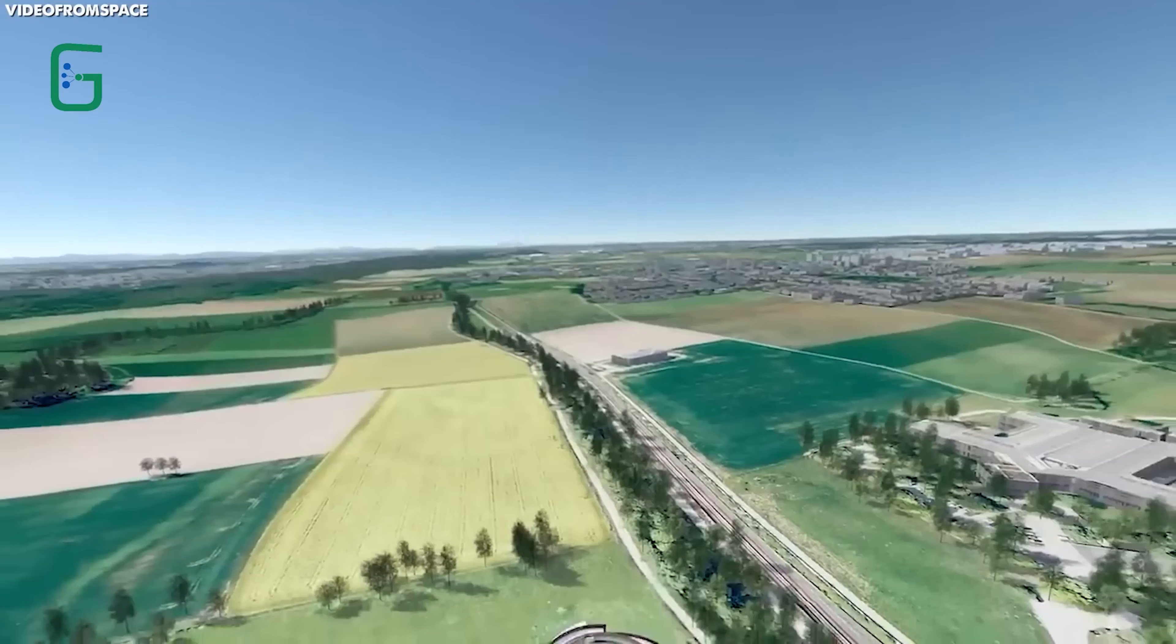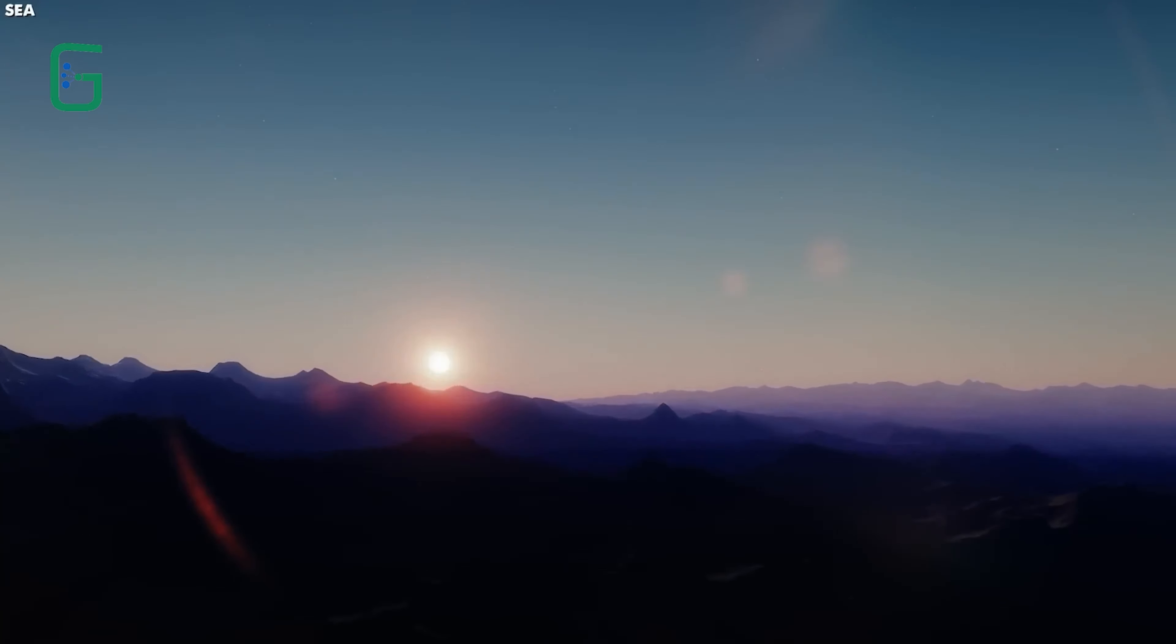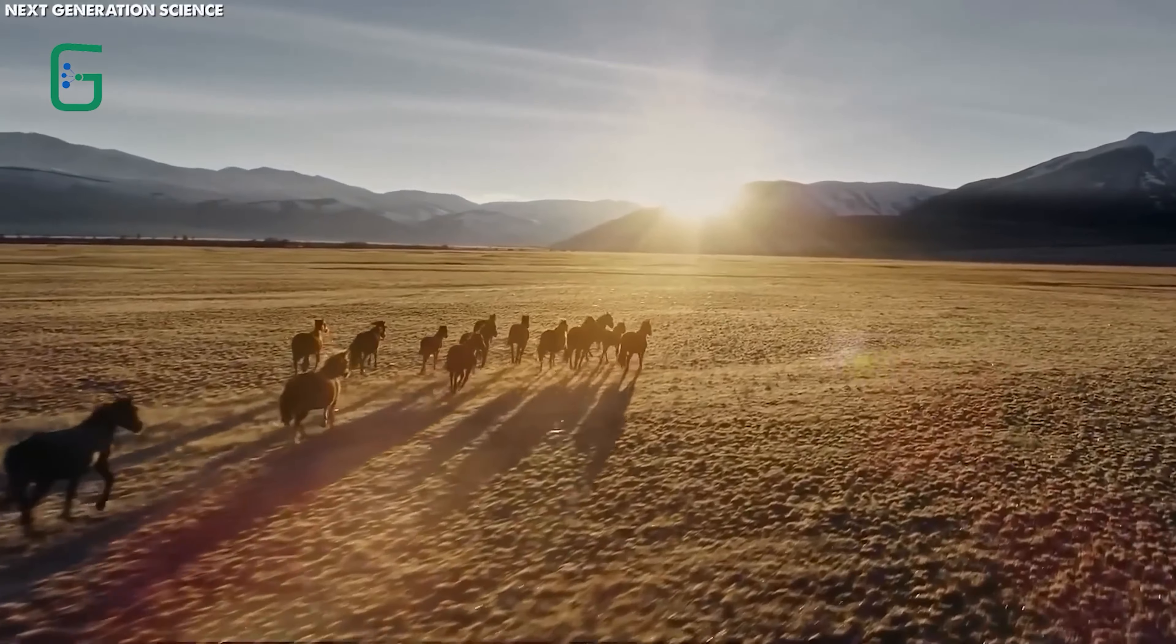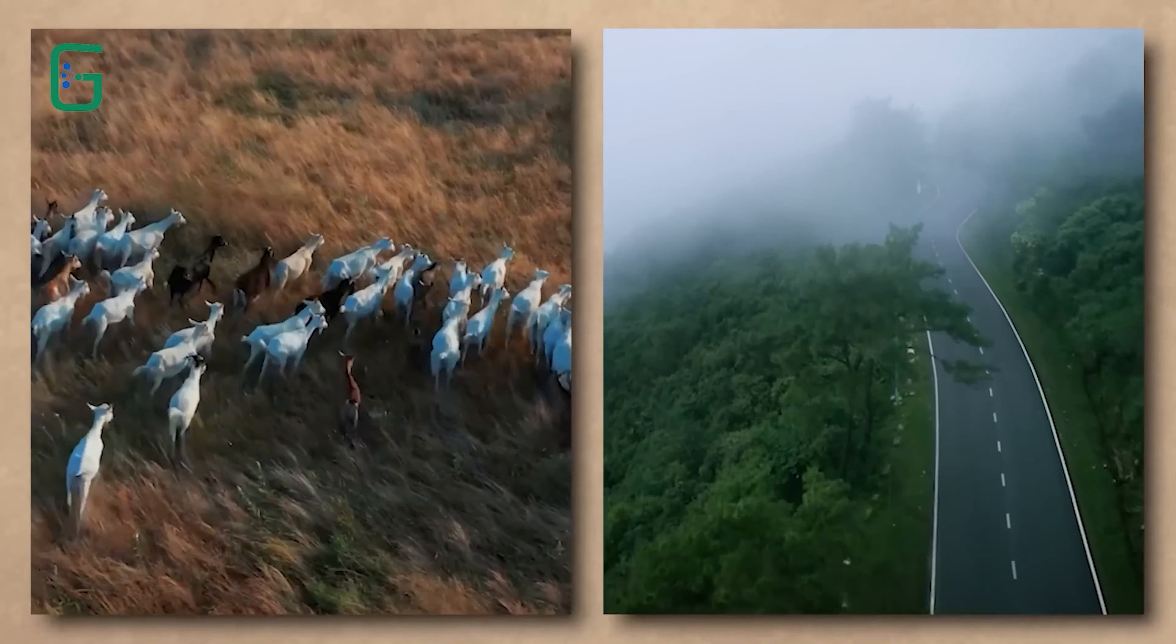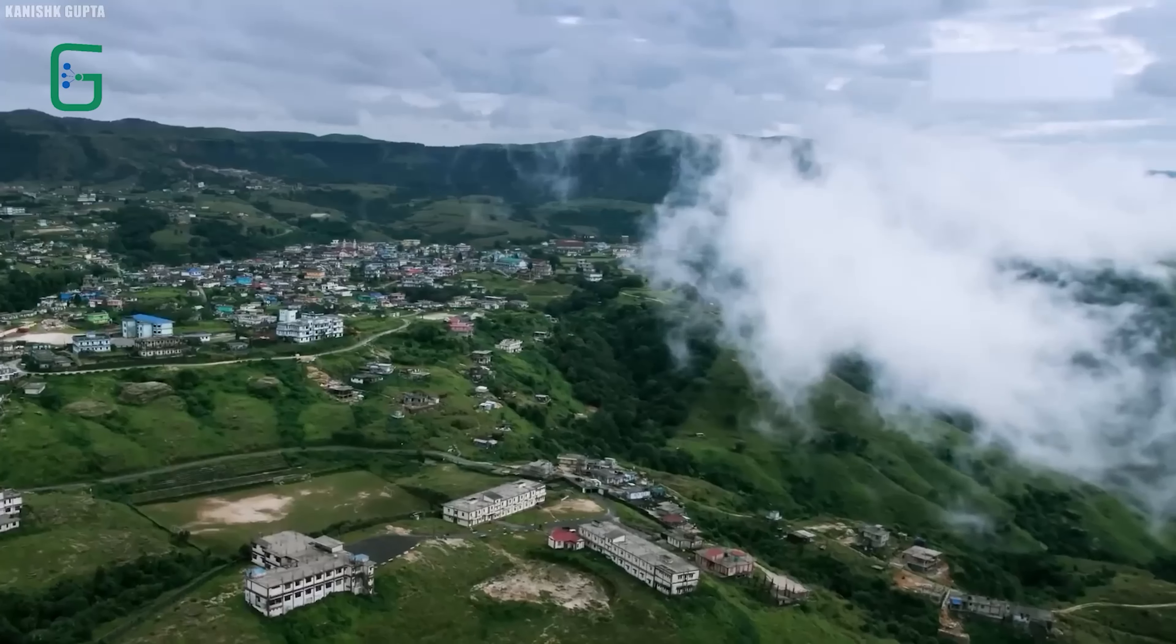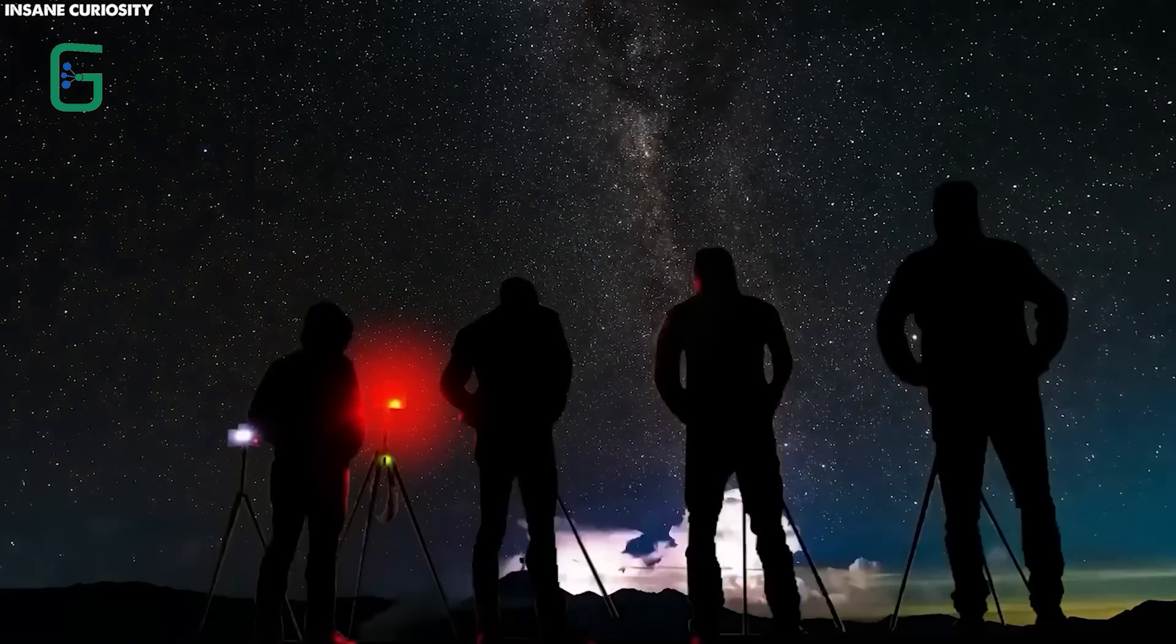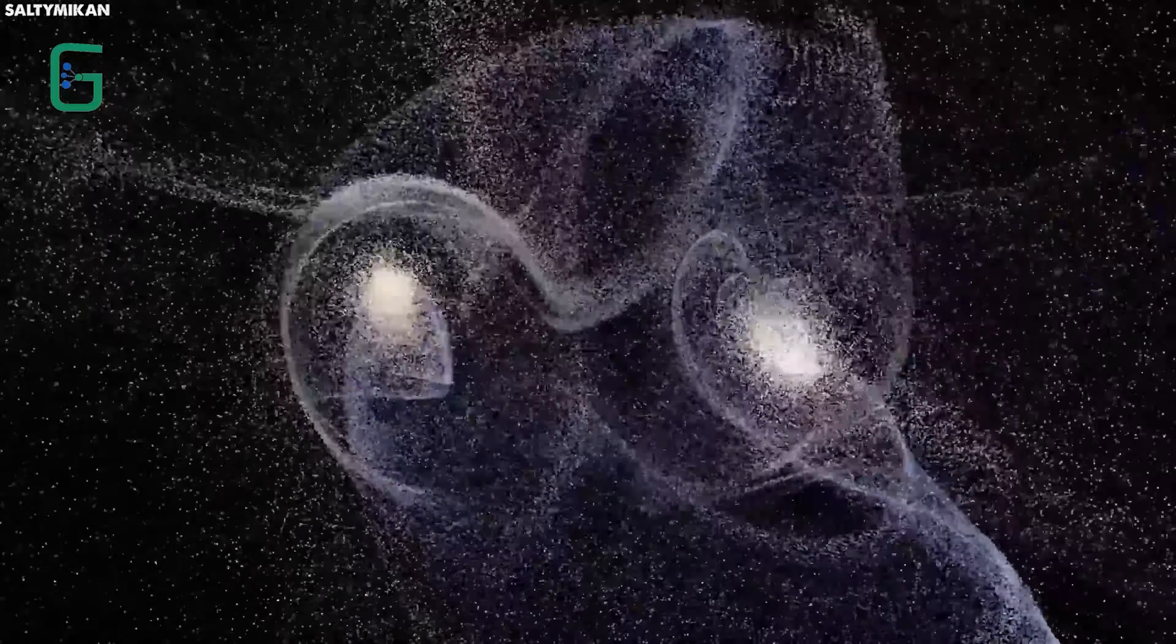Imagine Earth like a big puzzle. If things like our orbit or how the planet tilts change, it's like shaking up the puzzle pieces. Some creatures might find their homes no longer fit together like they used to. This could cause a lot of animals and plants to move around or even vanish. But it's not all bad news. Some creatures might find the new conditions perfect for them. However, for others, it's like a nightmare they can't wake up from.